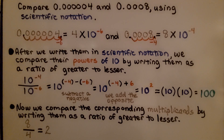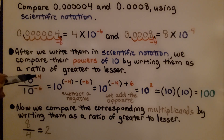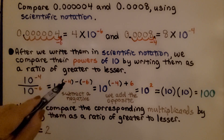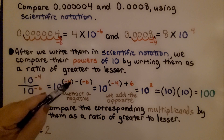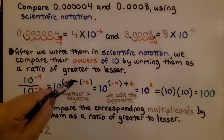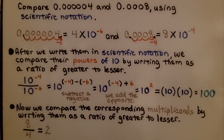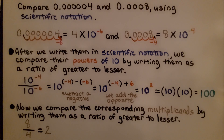After we write them in scientific notation, we compare their powers of 10 by writing them as a ratio of greater to lesser. We have 10 to the negative 4th power over 10 to the negative 6th power. When we have exponents like this, we subtract — that means we have negative 4 minus negative 6. When subtracting a negative, we add the opposite, so we make this a plus sign and the opposite of negative 6 is positive 6. We have negative 4 plus 6, which pushes us across 0 to a positive 2. We have 10 to the second power, which is 10 times 10, which is equal to 100.